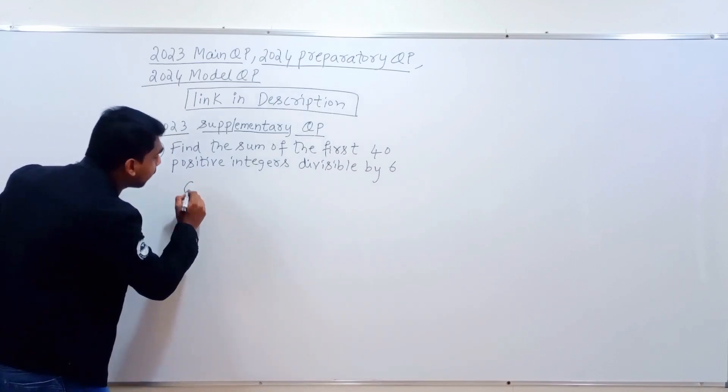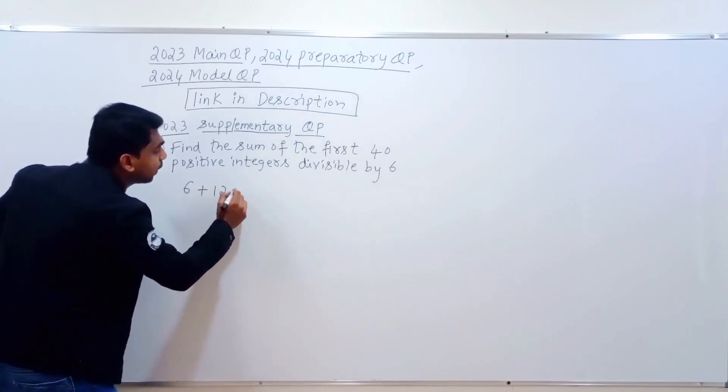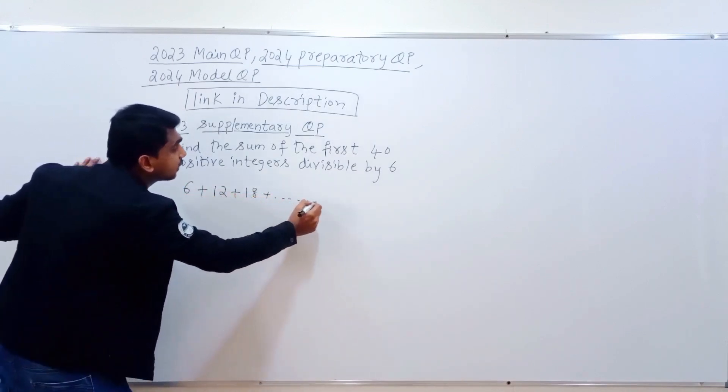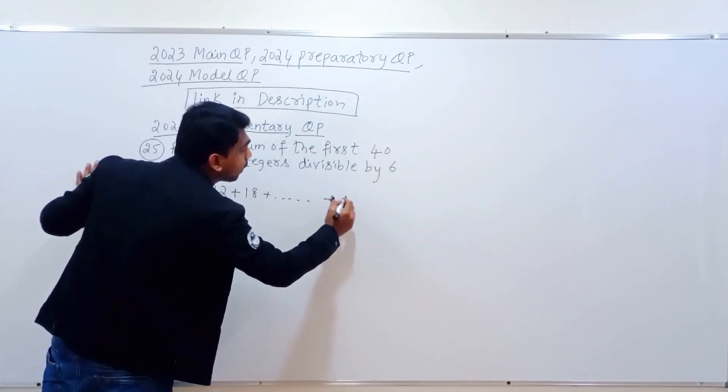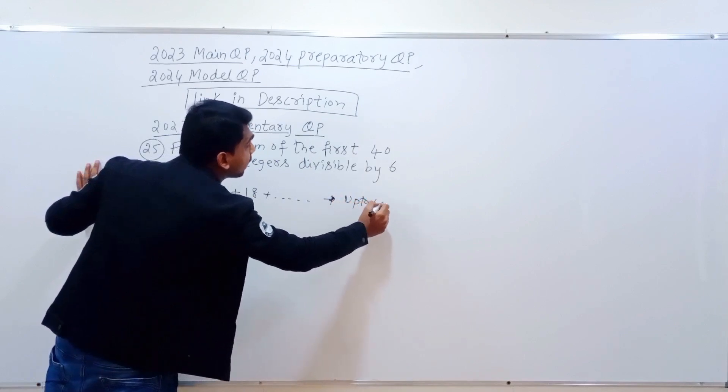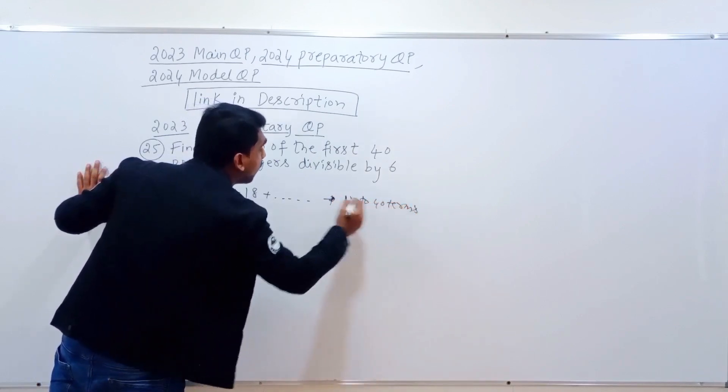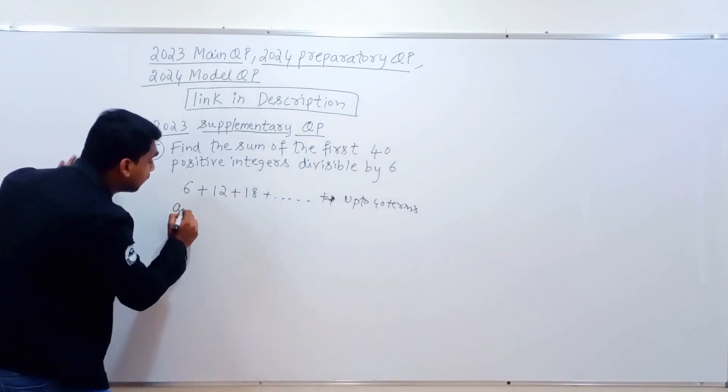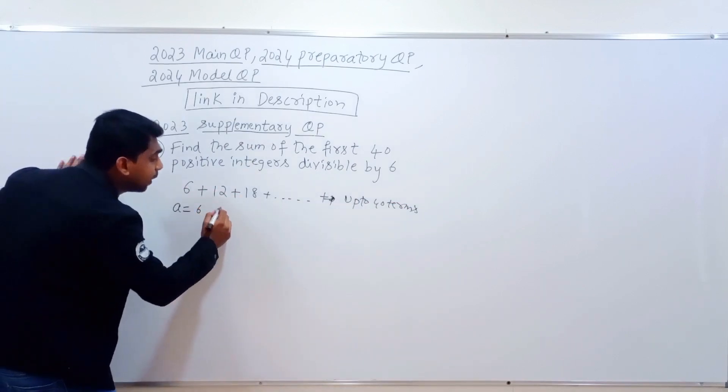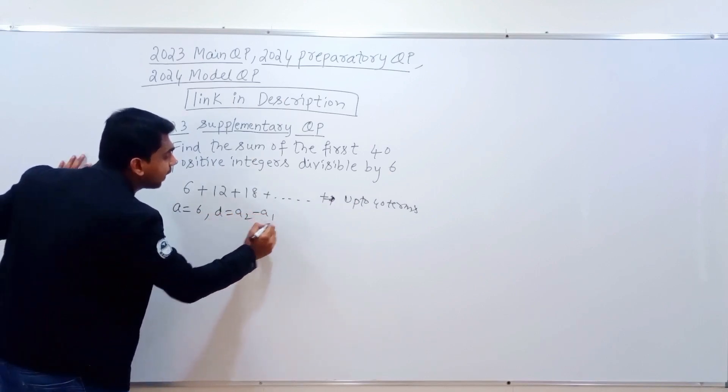6 table, 6, 12, 18, 24, and so on. Okay, in this case, the first term a1 is 6, and the common difference d is 6.